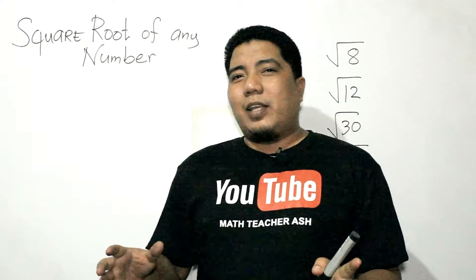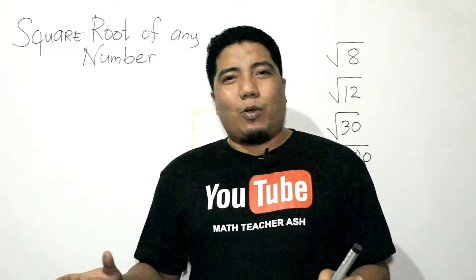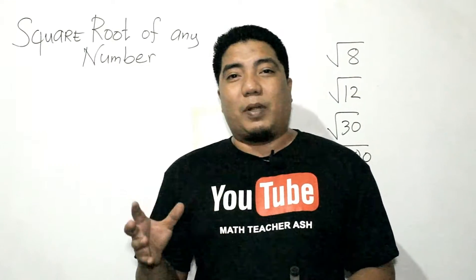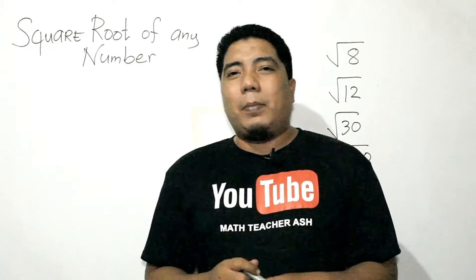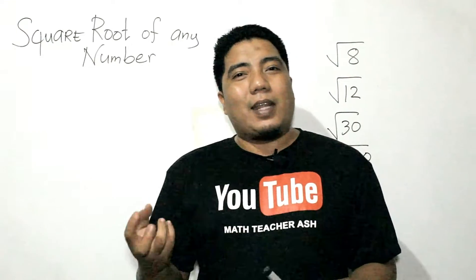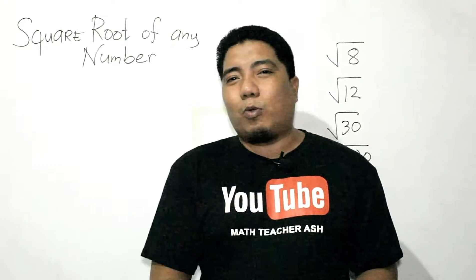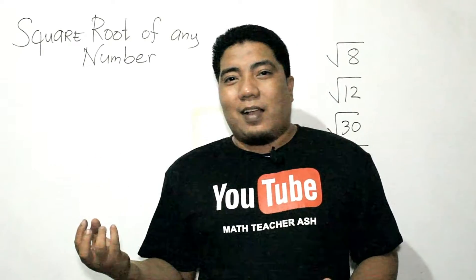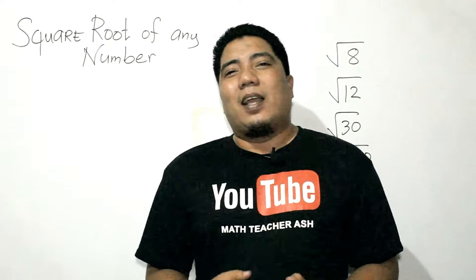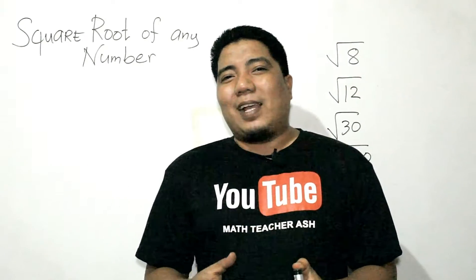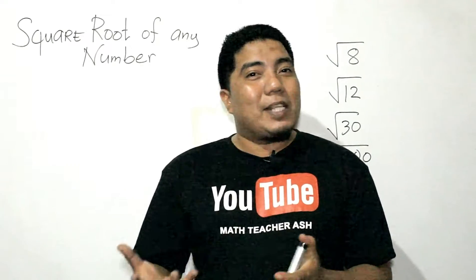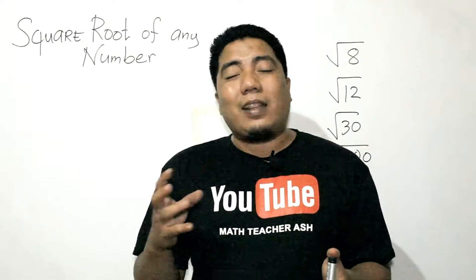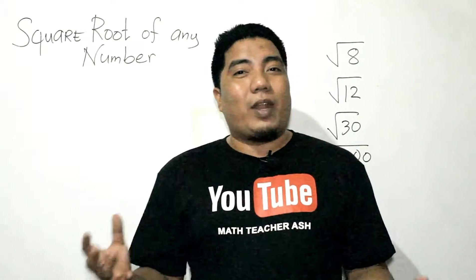Earlier in our intro, it is very easy to get the square root of a perfect square — meaning a number that has a certain principal root for its answer. For example, the square root of 100: the principal root is 10 because 10 times 10 is 100.